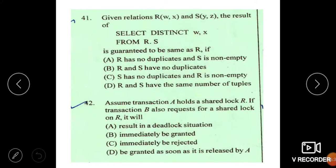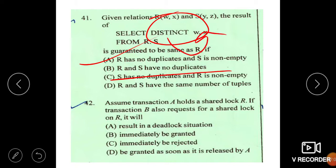Next question. Given relations, there are two relations R and S. The SQL query is select distinct W, X from R, S. Here distinct keyword is used. This distinct keyword removes all the duplicate values from the relational table. Option A says R has no duplicate and S is non-empty. This is correct. R and S have no duplicate. But here distinct is used only for W and X. So only R has no duplicate values. Option B is incorrect. In this way you can eliminate the options and get the answer.